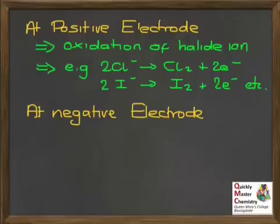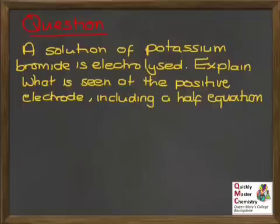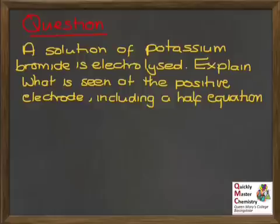At the negative electrode, a process involving water occurs, which is where the hydrogen comes from. However, the oxidation of the halide ion at the positive electrode is the most significant aspect of electrolysis for AS level understanding. A final question: if you had a solution of potassium bromide and electrolysed it, what would you see at the positive electrode? Explain your reasoning and give a half equation.